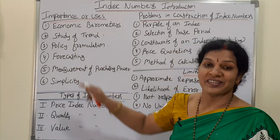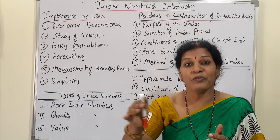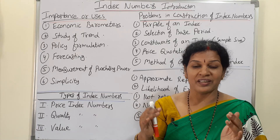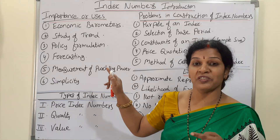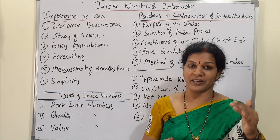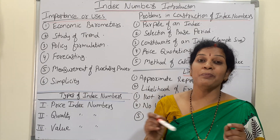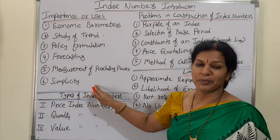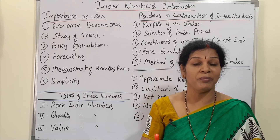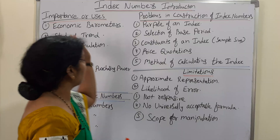The fourth use is forecasting. Index numbers indicate information from a given phenomenon, and according to that we can forecast what is going to happen — for example, whether prices of gold or stock exchange are going to increase or decrease. The fifth use is measurement of purchasing power — whether to purchase at this rate, wait, or sell. And the sixth use is simplicity: index numbers are quite easy to understand, easy to calculate, and easy to remember the formula, with no complications.